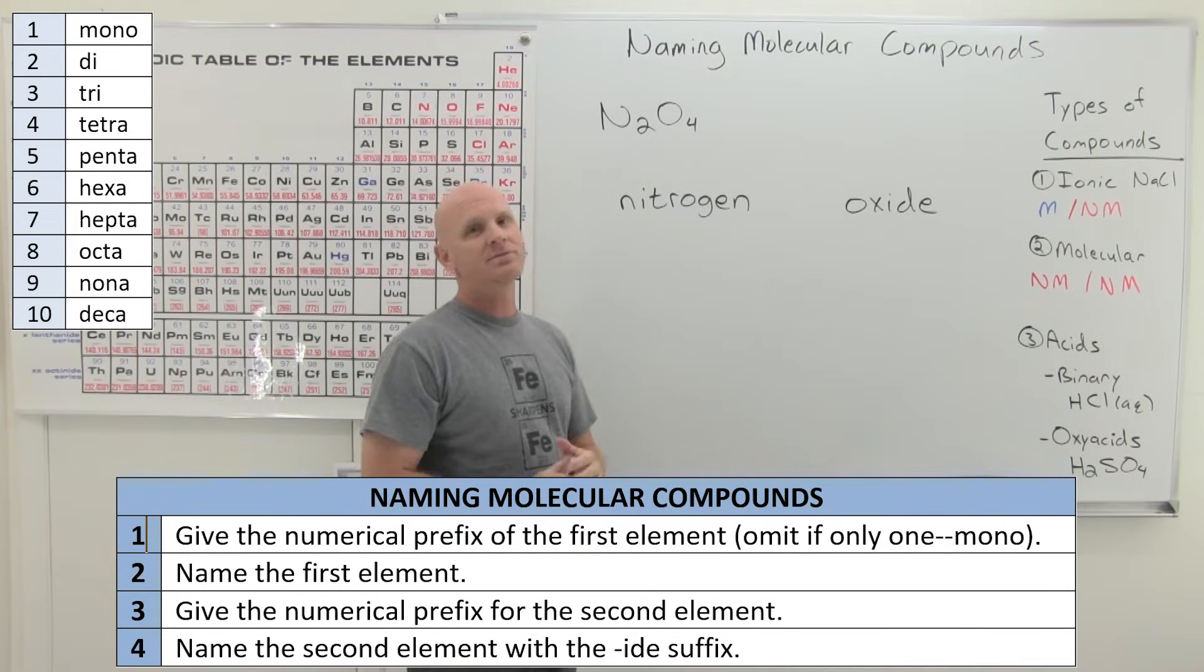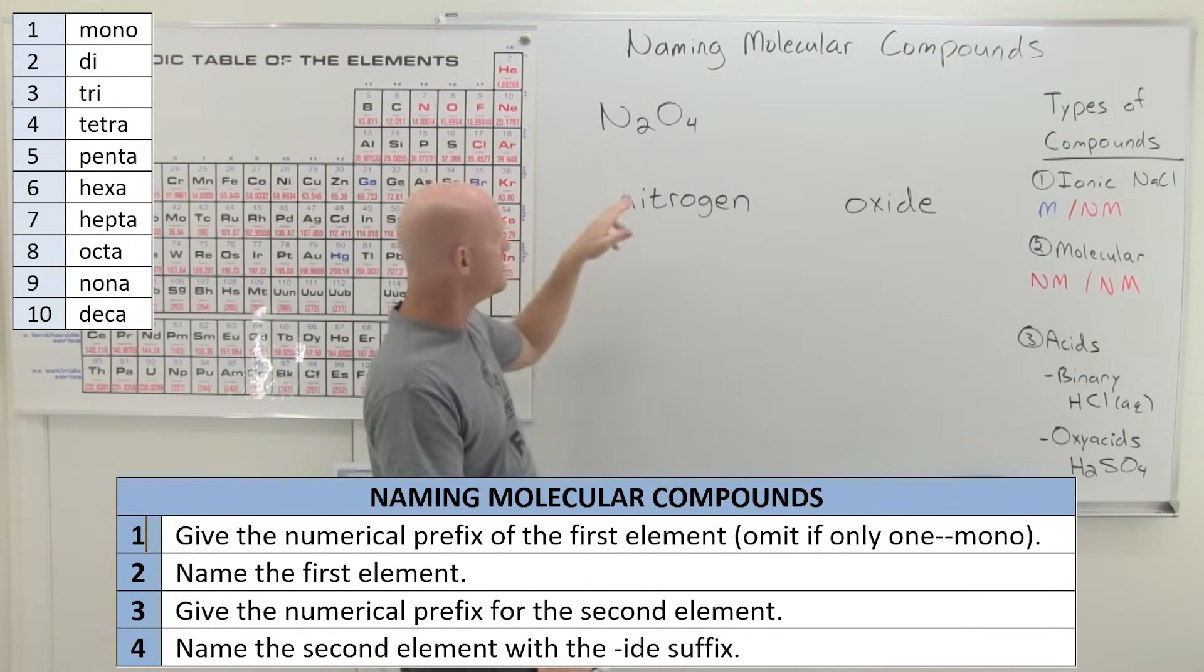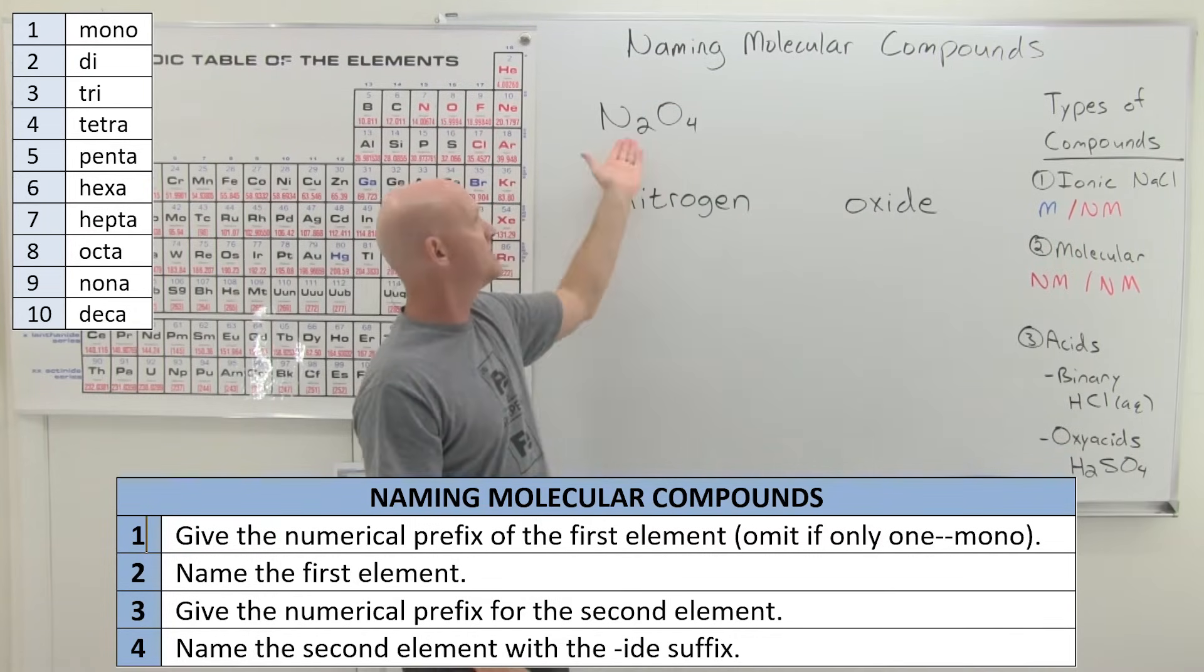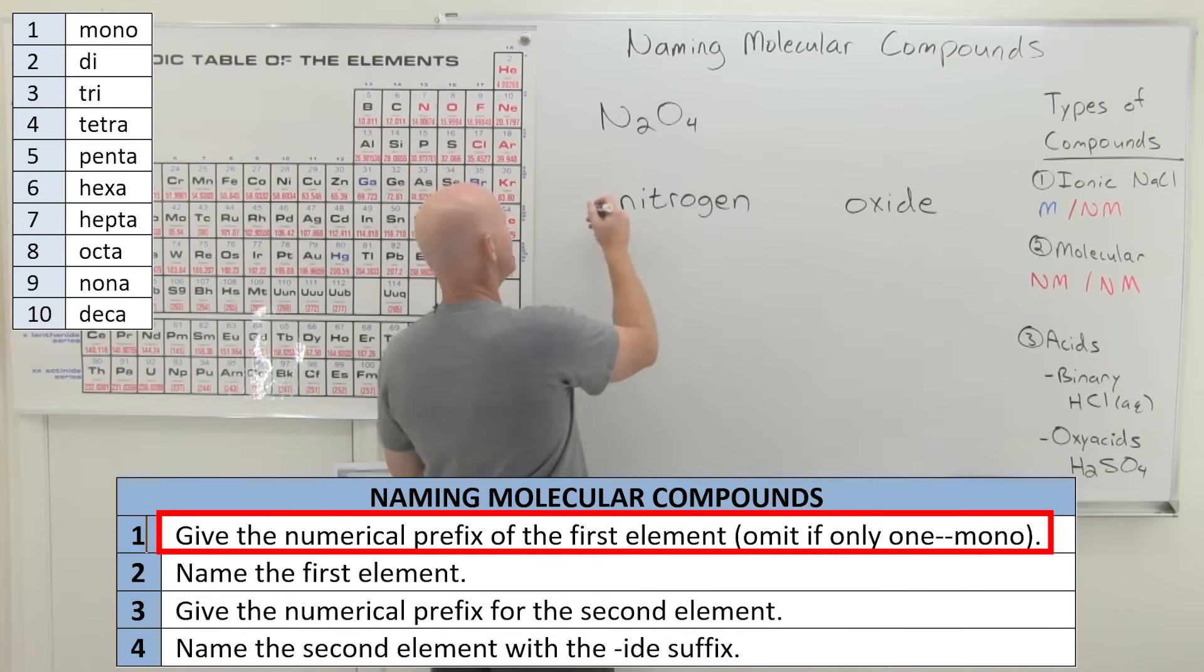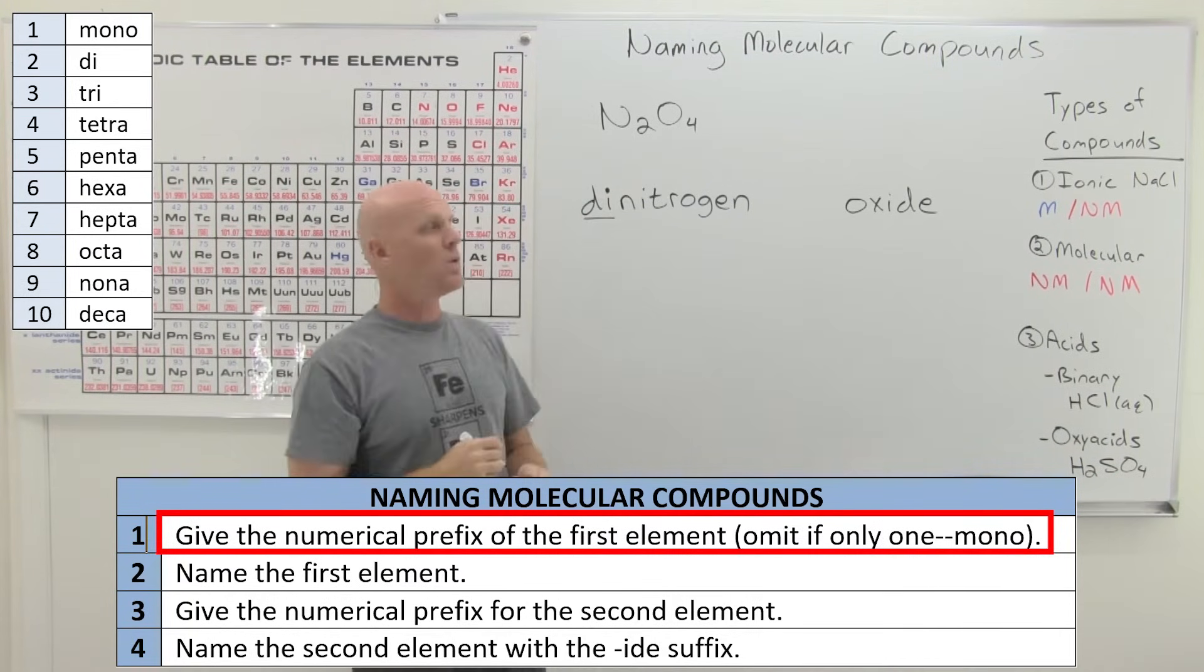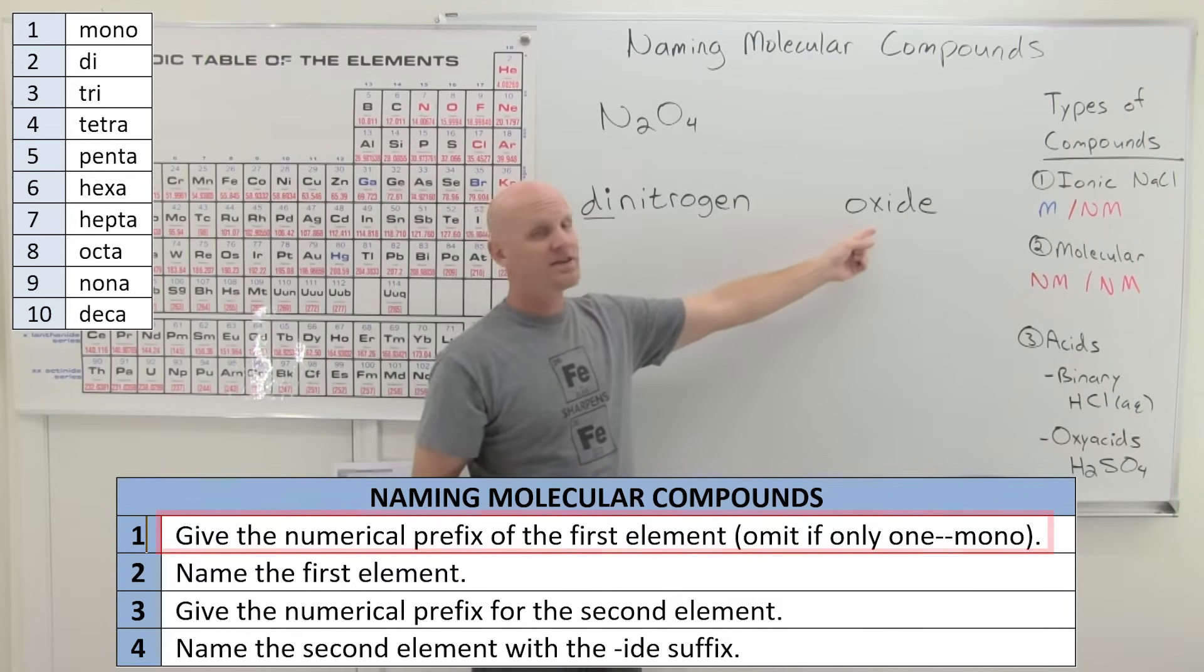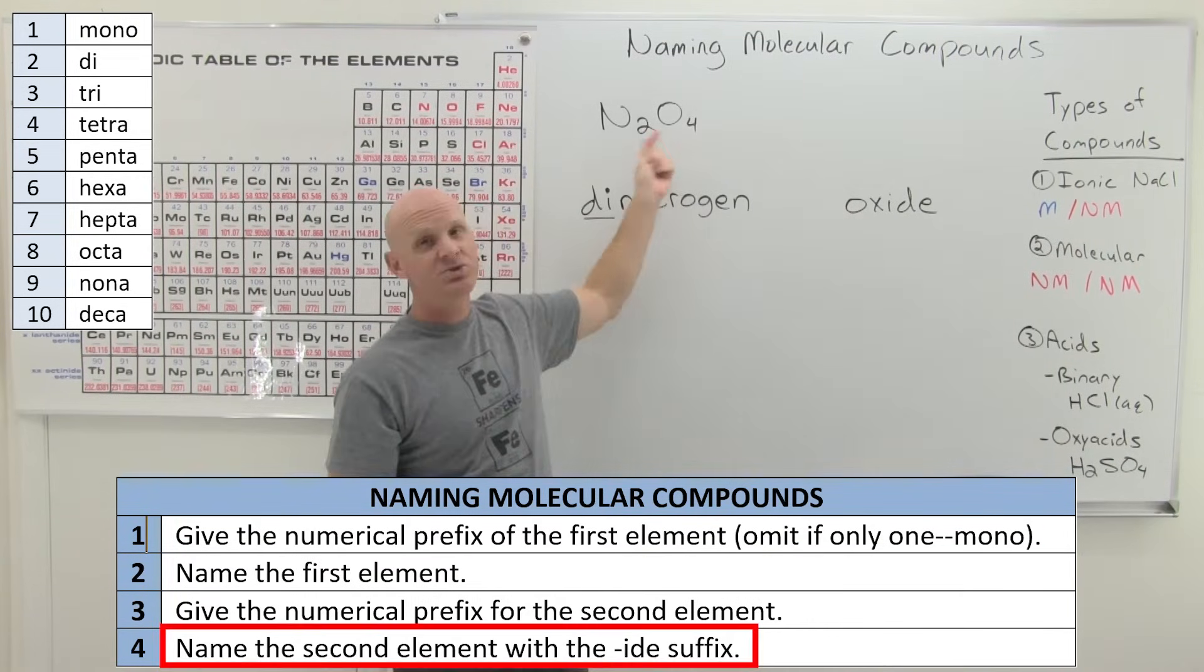And so in this case, we're going to use those lovely prefixes to give the numerical number of each of these in the formula. So like instead of just saying nitrogen, we're going to say dinitrogen. So we'll put that prefix right at the front. So it's one word here, dinitrogen.